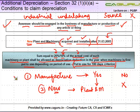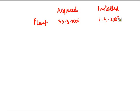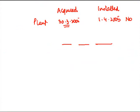Let me give you an example to clarify. Suppose I acquired the plant on 3rd March 2005 and installed it on 1st April 2005 — will I be entitled to additional depreciation? No, because the acquisition has not happened after 31st March 2005. The condition is that the asset must be both acquired and installed after 31st March 2005.